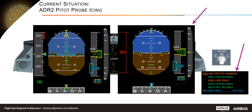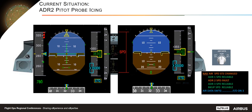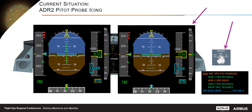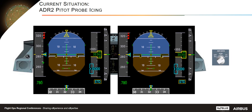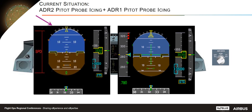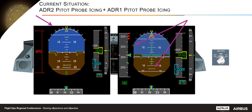PFD2 is flagged as usual in this case. The associated action is proposed on the ECAM — in this case, switching the air data selector to FO on 3. PFD2 then recovers reliable data from ADR3. But now ADR1 speed becomes faulty. Note that two ADRs are now faulty; therefore protections are lost, and reversion to alternate law occurs as usual in this type of case.